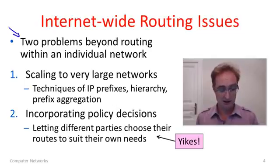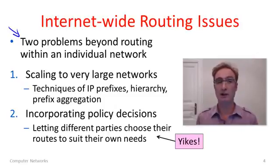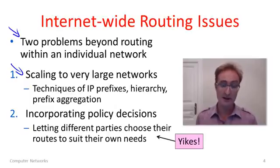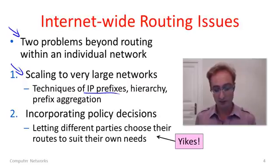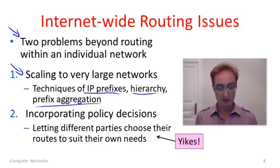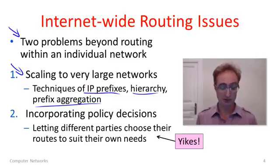These multiple parties bring two different problems beyond what we've seen in routing individual networks. The first is scale. We now have a very large network because we're combining all different networks together to form the internet. We need techniques to improve scaling, such as IP prefixes with hierarchy and prefix aggregation. The parties themselves can also help with scaling.